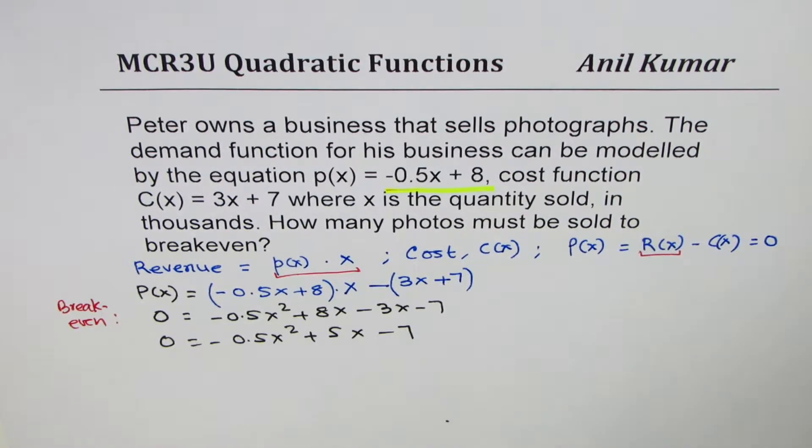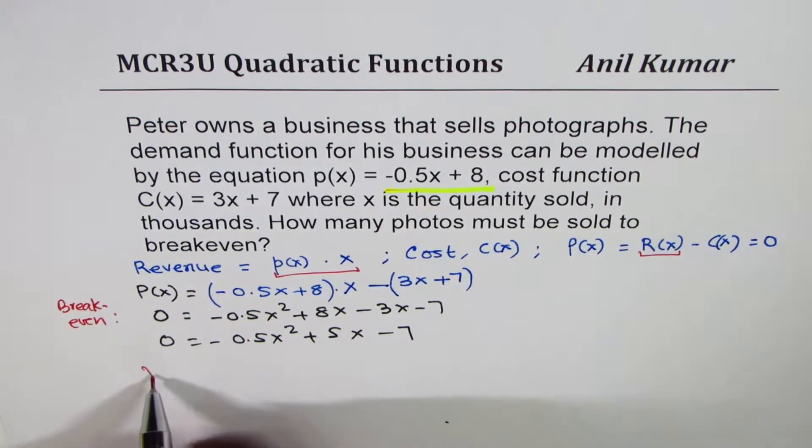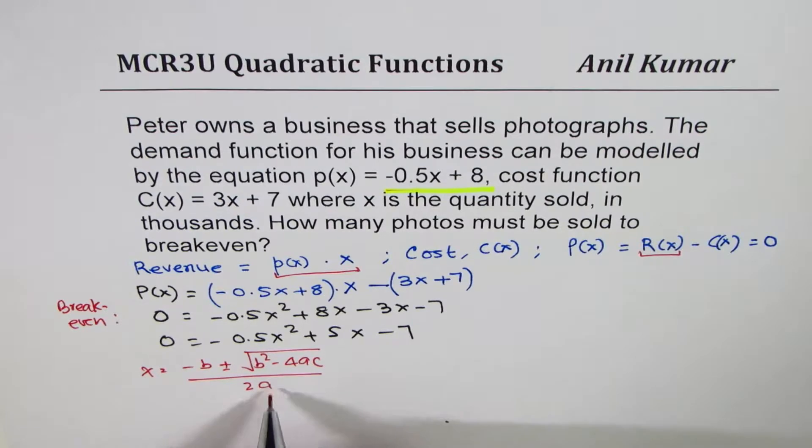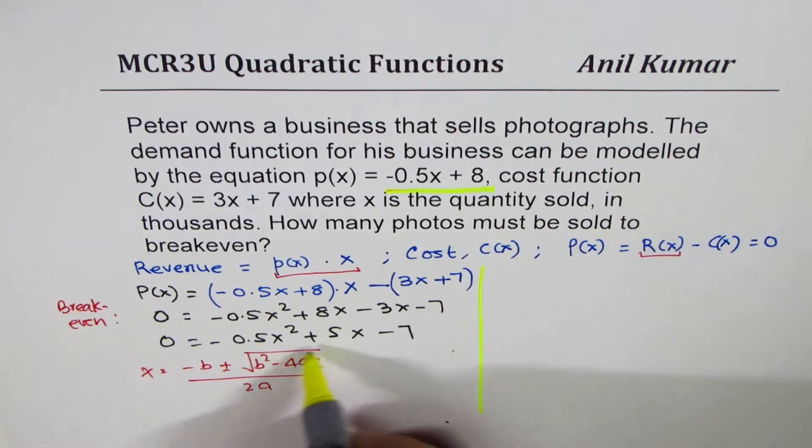Now in such an equation, we can apply the quadratic formula. So the quadratic formula, as you remember, is x will be equals to minus b plus minus square root of b square minus 4ac divided by 2a. So that is the quadratic formula to be applied, where a is minus 0.5, b is 5, and c is minus 7.